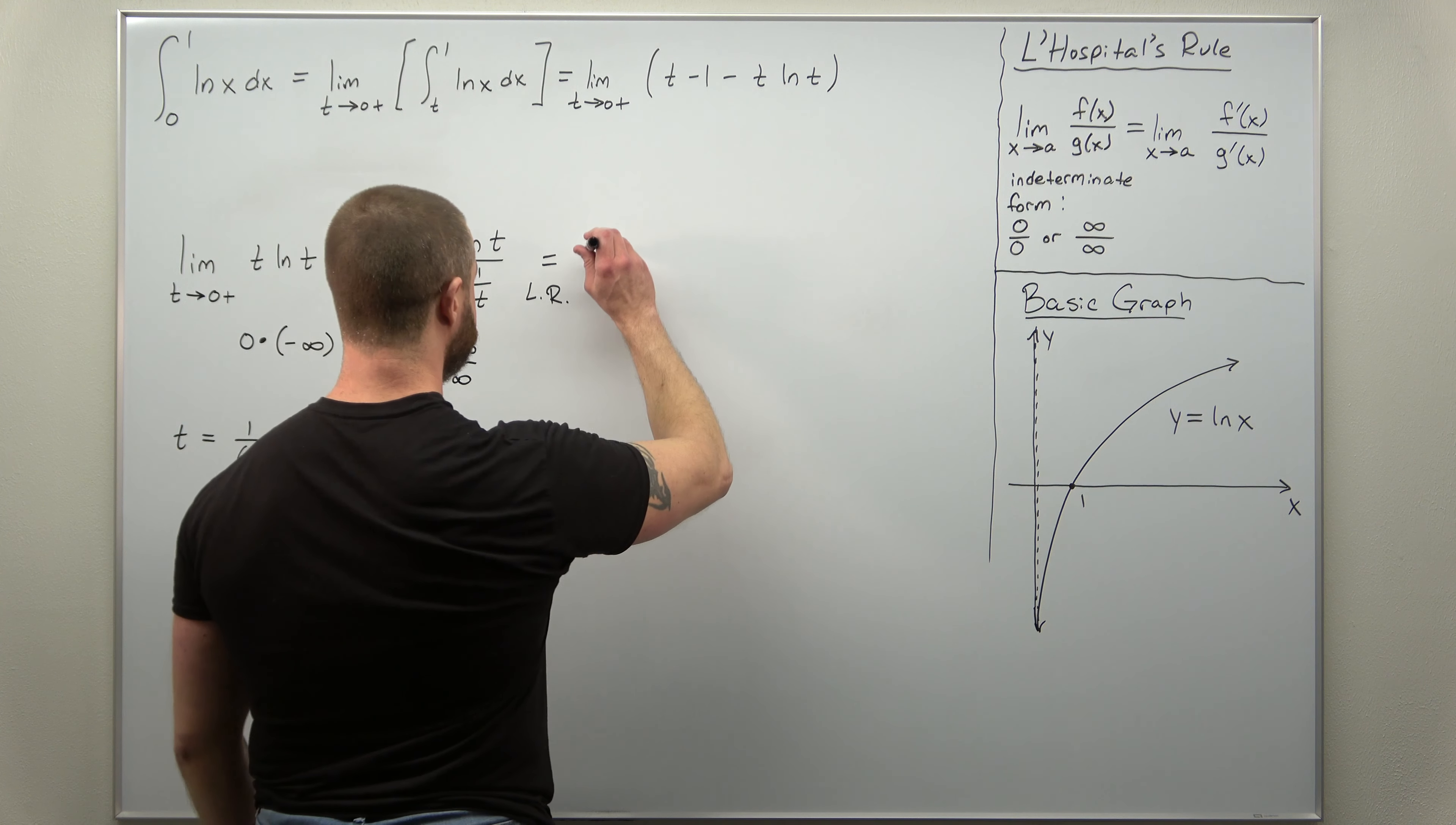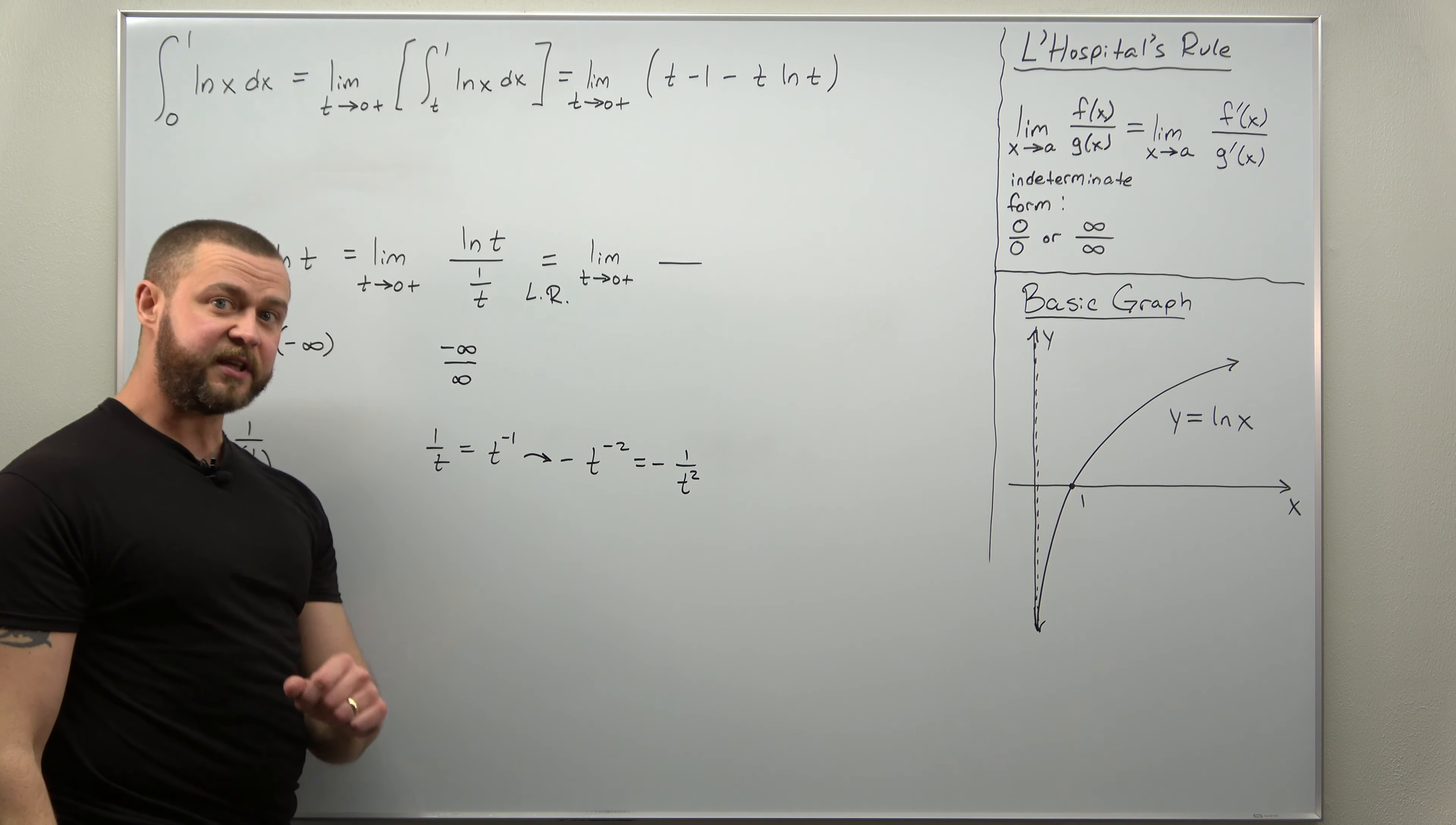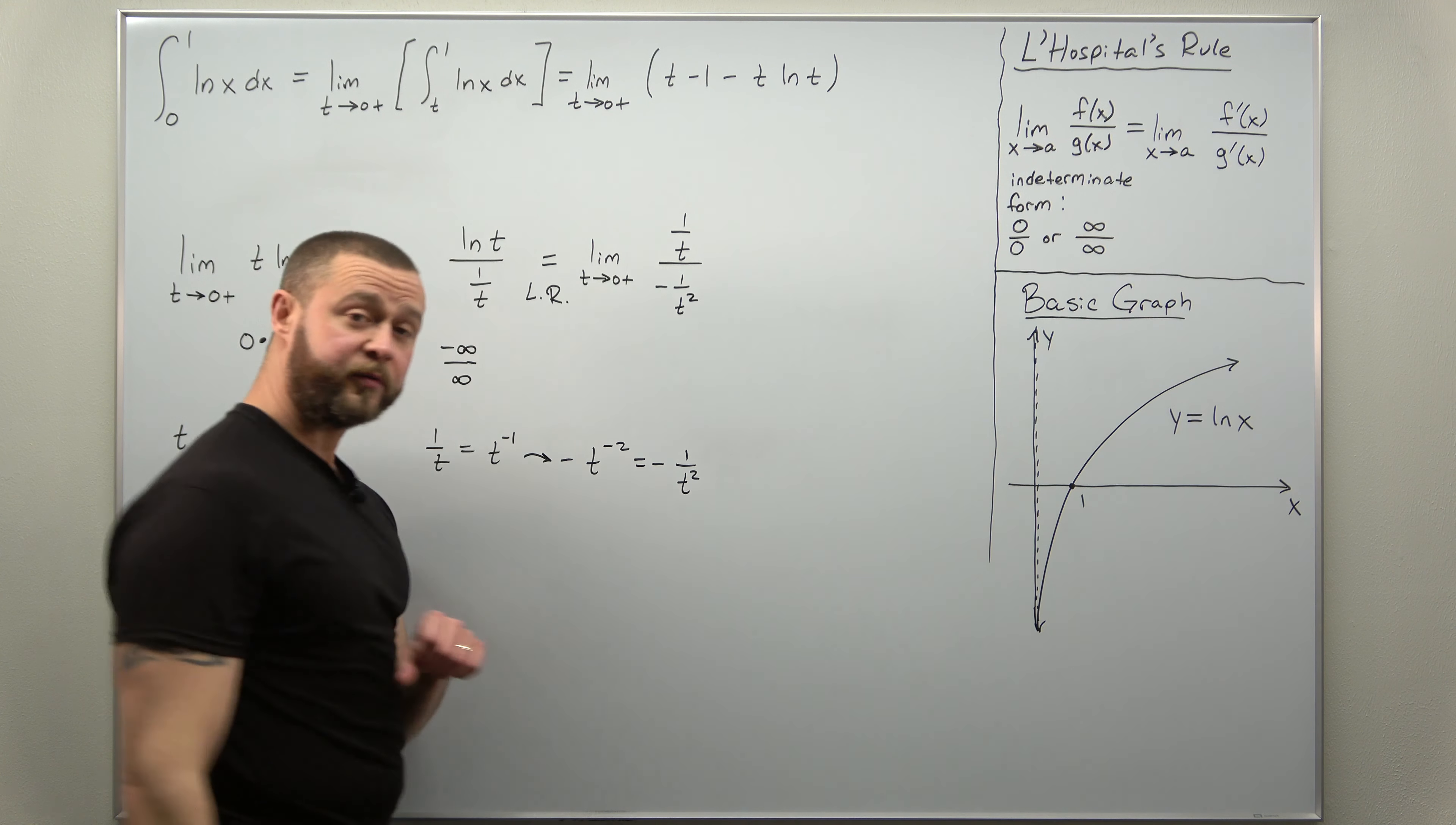The limit stays the same. So limit as t approaches 0 from the right. And now we differentiate numerator and denominator individually. Natural log of t, that differentiates to 1 over t. 1 over t, that differentiates to negative 1 over t squared.